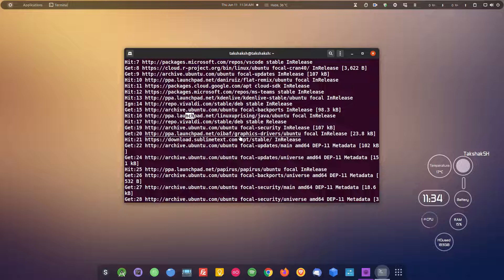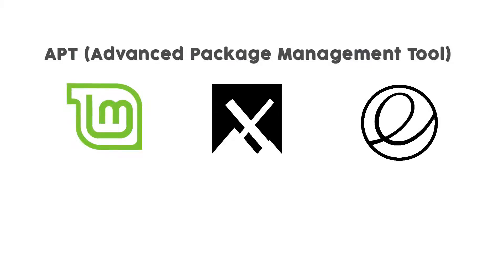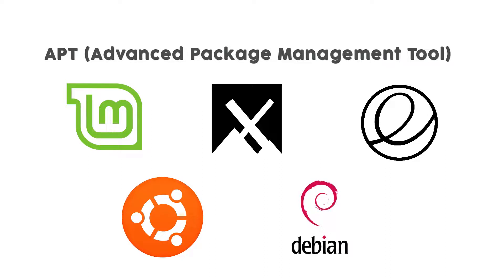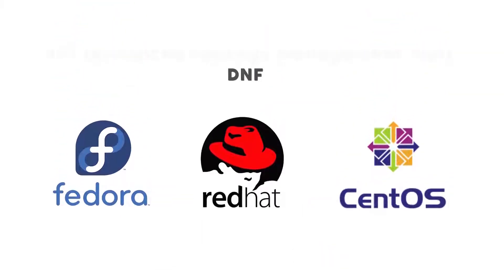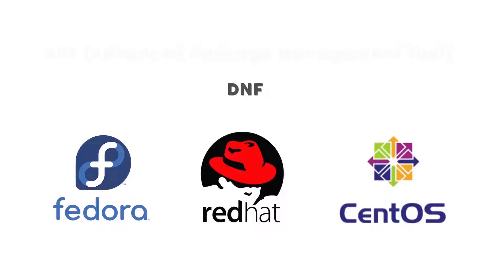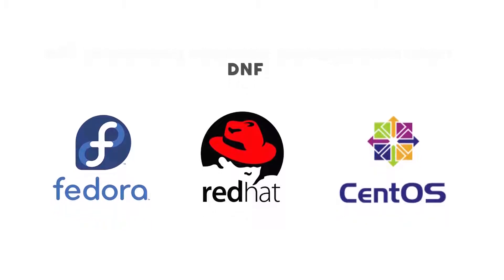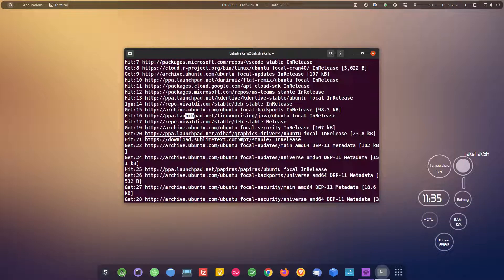There are many package managers out there, but the most popular one is the Advanced Package Tool — APT — which is used by Linux Mint, elementary OS, Ubuntu, and Debian. There are other package managers as well: DNF is used by Fedora and Red Hat and their derivatives like CentOS (which previously used YUM), and there is also pacman used by Manjaro. But APT is the most popular one.